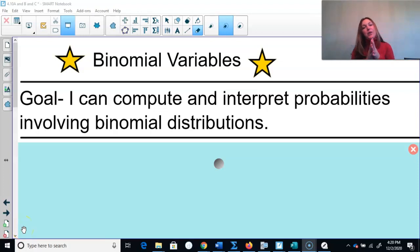Hey AP Stat students, today our goal is to make sure that we can compute and interpret probabilities involving a binomial distribution. We've talked about a few different distributions - the normal distribution, a basic probability distribution, and now binomial distributions. Our last distribution we're going to talk about is the geometric distribution. So let's get started with the binomial distribution for today.